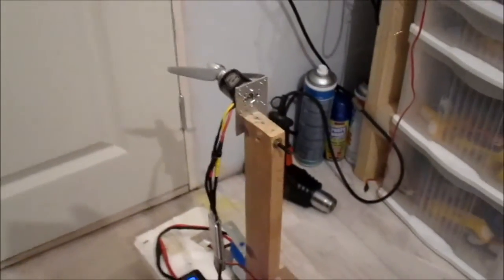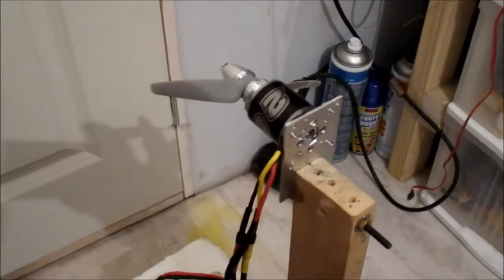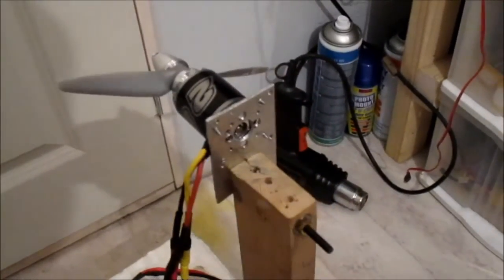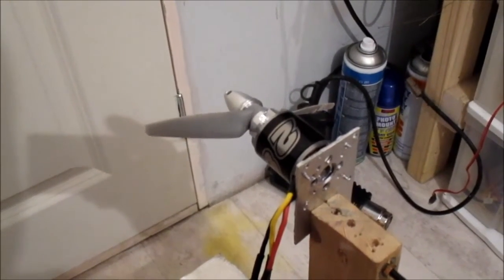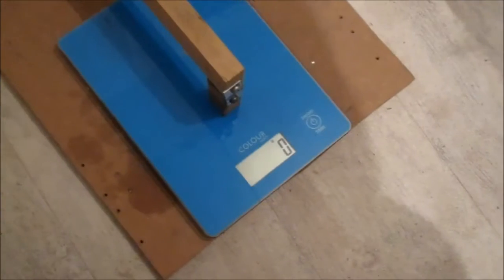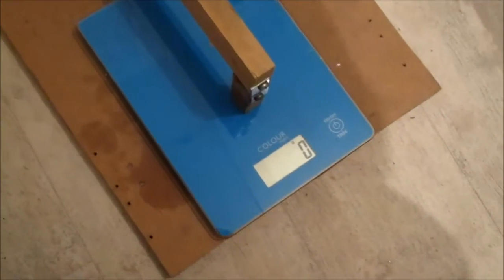This next prop should be a good prop for speed. The 5 by 5 should be pretty good for speed, a bit less thrust, but this one should be a lot better for speed. It's an APC 5.25 by 6.25 prop. I'm not expecting too much on thrust but as long as the amps are okay, should be good for speed.